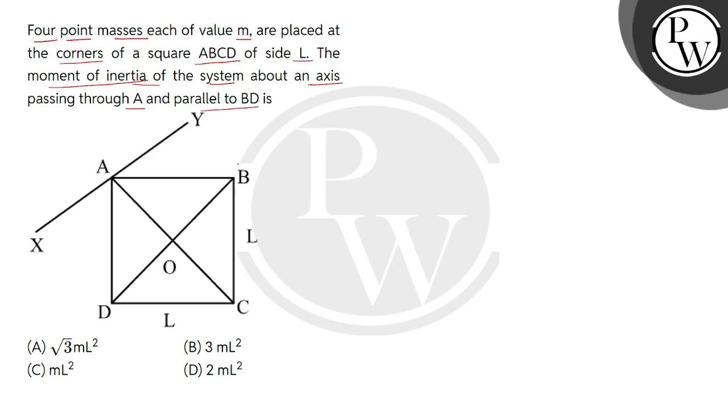So given is one square, which has 4 corners A, B, C and D. At each corner are placed point masses of mass value M. So we can assume their value is M and these are point masses.